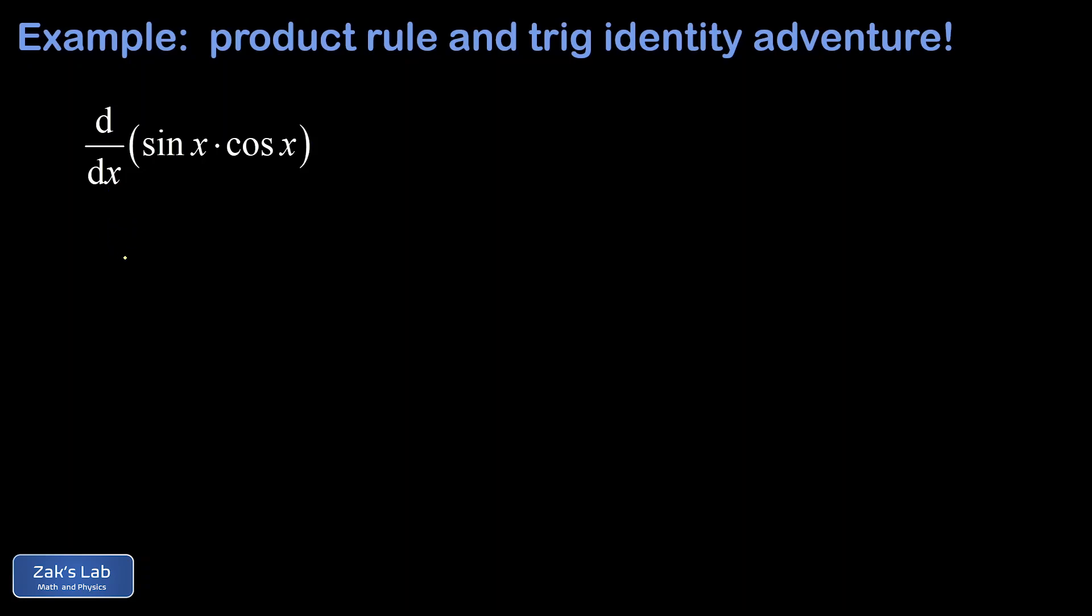In this video we're taking the first derivative of sine x times cosine x and I'm actually going to do this derivative in two different ways and then show that the two answers are equivalent by exploring some trigonometric identities.